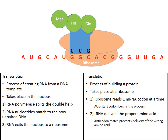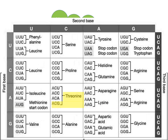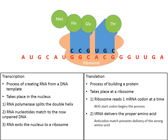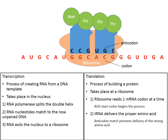The ribosome moves down to the next codon. ACG is flashing. We find ACG on the chart — it's the amino acid threonine, abbreviated THR. Threonine is delivered by transfer RNA. Because the anticodon and codon are exact opposites, all the amino acids are bonded together. The tRNA on the left detaches and floats away — it can be reused, as can all the others.